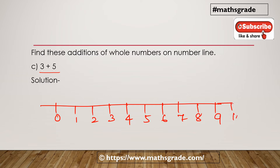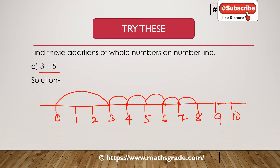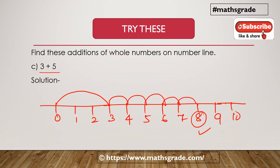...10. Starting from 0, move 3 steps to reach 3. Then move 5 more steps: 1, 2, 3, 4, 5 — reaching 8. So 3 plus 5 is 8. This is the representation of the addition of numbers 3 and 5, that is 3 plus 5 on the number line.